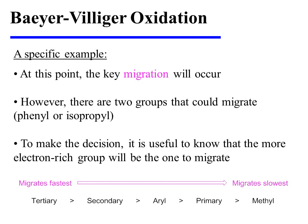At this point, the key migration will occur. However, there are two groups that could migrate: phenyl or isopropyl. To decide which group actually migrates, it is useful to know that the more electron-rich group will be the one that migrates. The order of migratory aptitude is shown here, with the most electron-rich tertiary carbons migrating the fastest, and the least electron-rich methyl groups migrating the slowest.